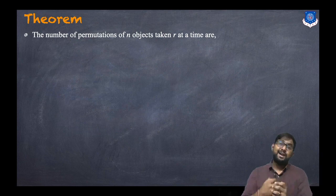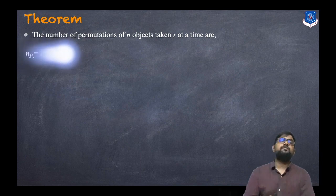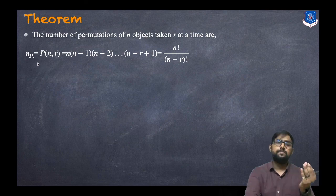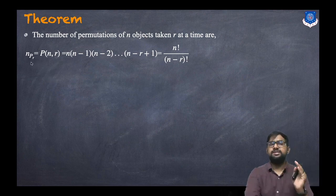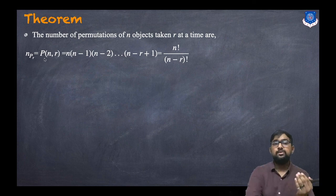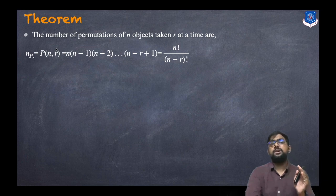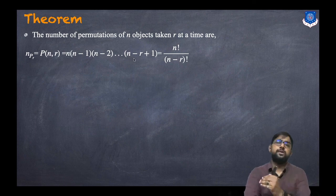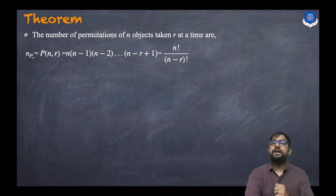The theorem states: the number of permutations of n objects taken r at a time is denoted nPr, and equals n times (n minus 1) times (n minus 2) up to (n minus r plus 1), which equals n factorial divided by (n minus r) factorial.